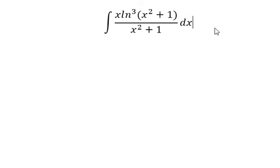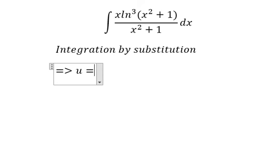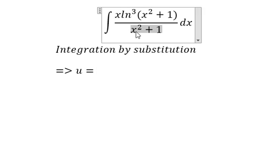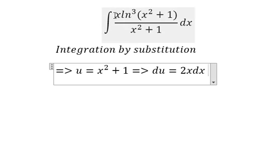I will show the technique how to answer the question. In this situation, we will use integration by substitution. So we have u equals x² plus 1, du equals 2x dx. Because we have x outside, we divide both sides by 2.